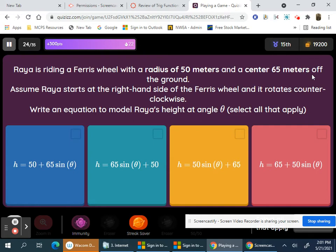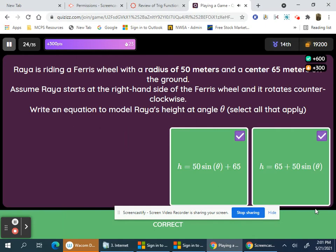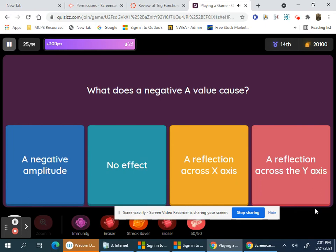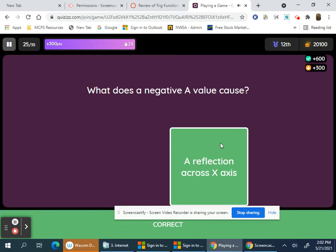Ray A is riding on radius 50, center 75. So 50, and on the right-hand side, there's a 50 sine plus 65. Once you mark everyone, it's right. So here's the other one. There's a negative value that causes a reflection over the x-axis.